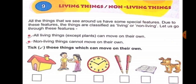Non-living things cannot move on their own. They cannot move from one place to another by themselves. For example, a toy car or a real car — we have to drive the car, it does not move on its own.